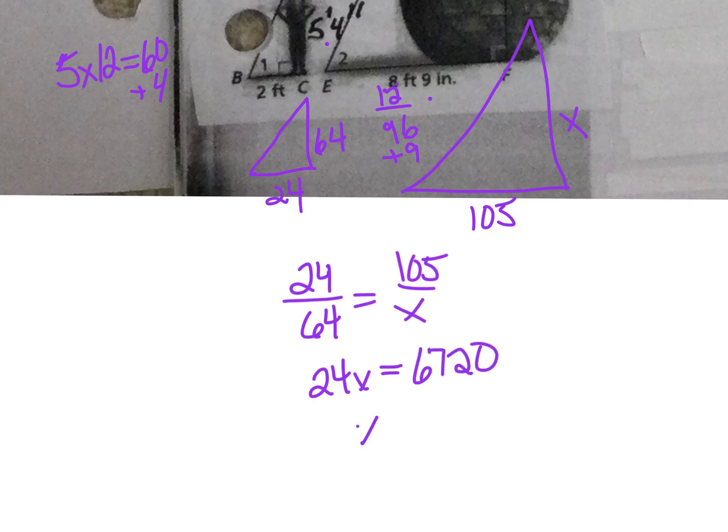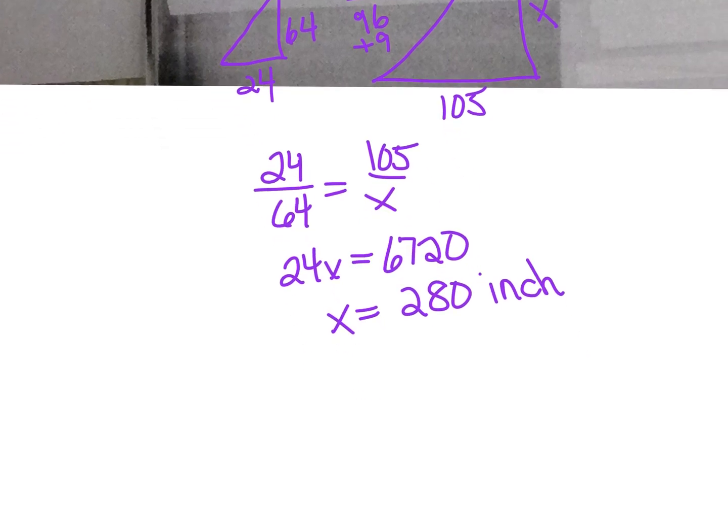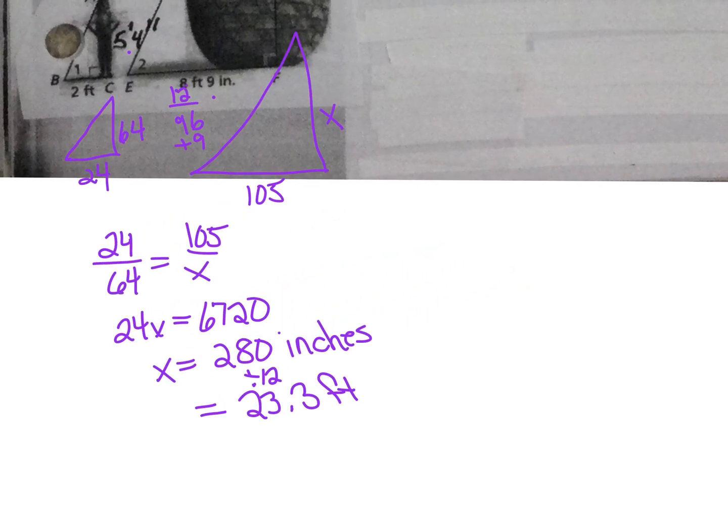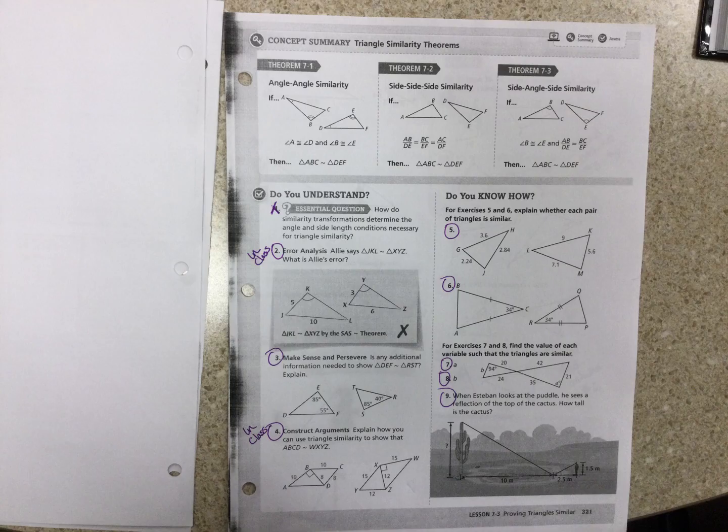So now I can do shadow is to height as shadow is to height. And when I cross-multiply and then divide, I get 280 inches. And then if I divide that by 12, I get 23.3 feet, 12 inches in a foot. So I need to do that in order to help with the homework, because there will be something in this. That's it.